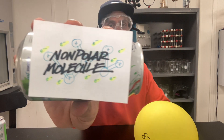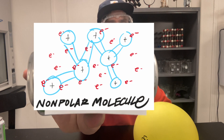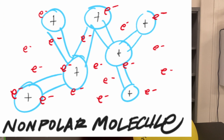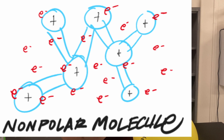If you pay attention to the drawing on the aluminum can — our non-polar molecule — you're going to see there's a bunch of atoms. They must be non-metals, because that's what makes up molecules, and they're connected by covalent bonds. In the center of each atom, I've drawn a positive charge to represent the nucleus. Strewn about in an evenly dispersed way, there are electrons. Notice that the electrons are not concentrated on one part of the molecule, but evenly distributed. This even distribution of electrons is what makes this molecule non-polar.